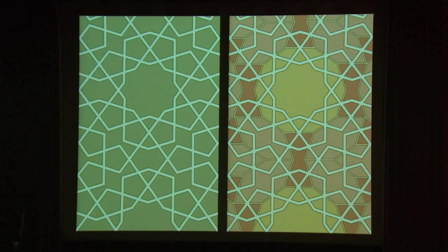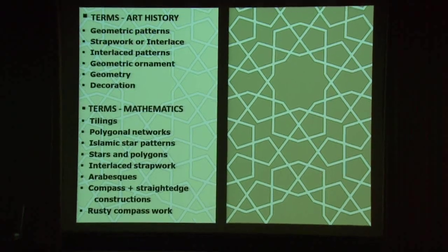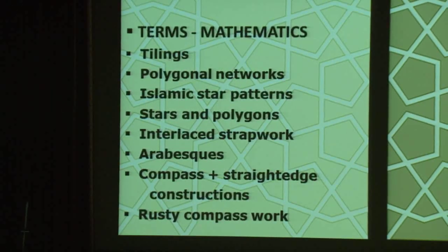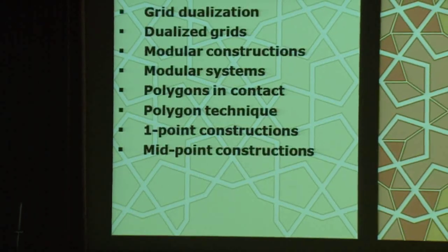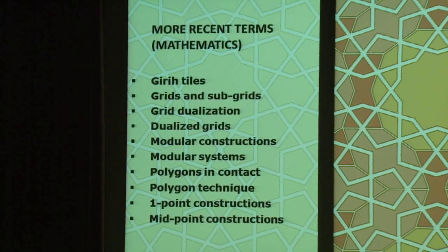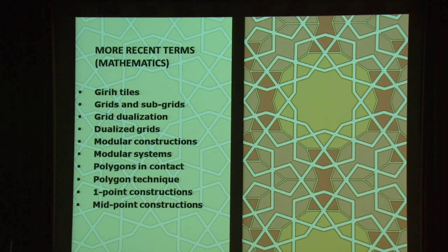Let us examine a portion of the main pattern surrounding the Gumbad-i Qabud in Maragha of the late 12th century, as drawn by Eric Broug. In art historical literature, such patterns are described as geometric, strap work, or interlaced — generally considered ornament or decoration. In mathematics, it might be called a tiling or polygonal network, more specifically a compass and straightedge construction with a fixed opening. More recent studies focus on the underlying subgrid, using terms such as dualized grids, midpoint construction, and Girih tiles.